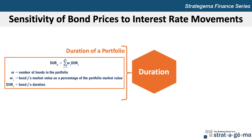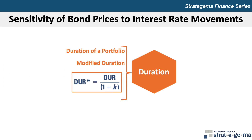Bond portfolio managers commonly attempt to immunize their portfolios by taking steps intended to insulate their values from the effects of interest rate movements. The first step is to determine the sensitivity of their portfolio to such movements. Once the duration of each individual bond is measured, the bond portfolio duration, DURP, can be determined as the weighted average of bond durations, with weights based on the bond's relative market value. The modified duration, denoted as DUR*, is estimated as DUR divided by (1 plus K), where K is the prevailing yield rate on bonds. The modified duration can be used to estimate the percentage change in the bond's price in response to a 1 percentage point change in prevailing bond yields.